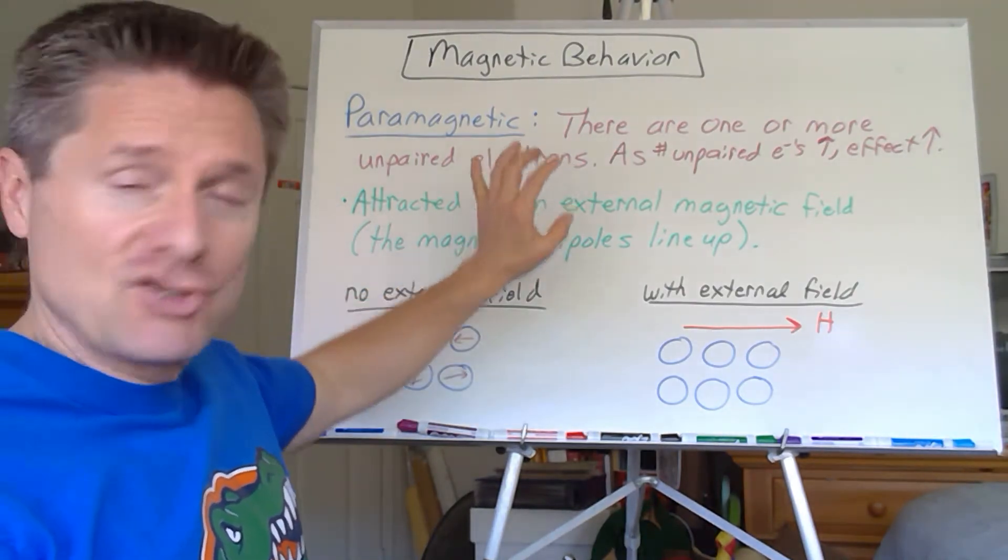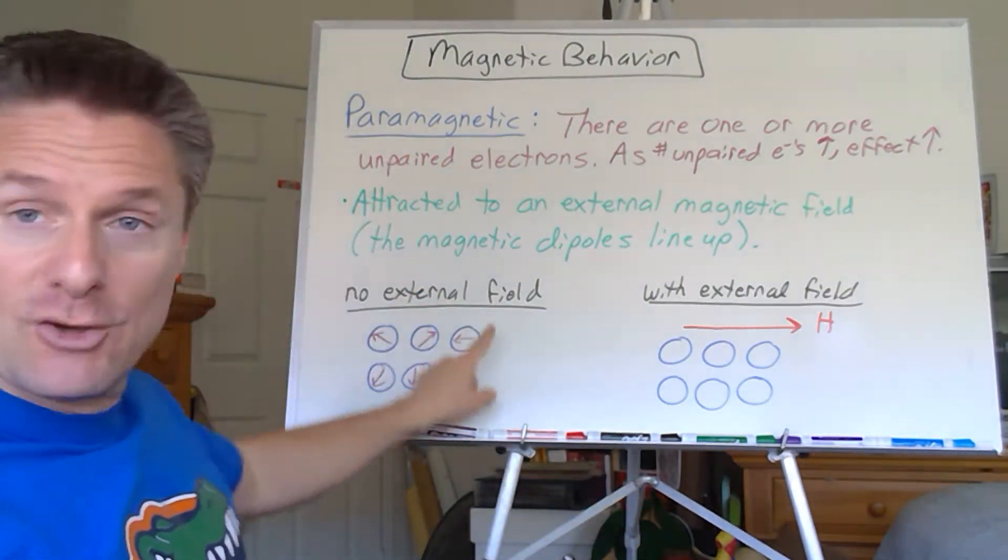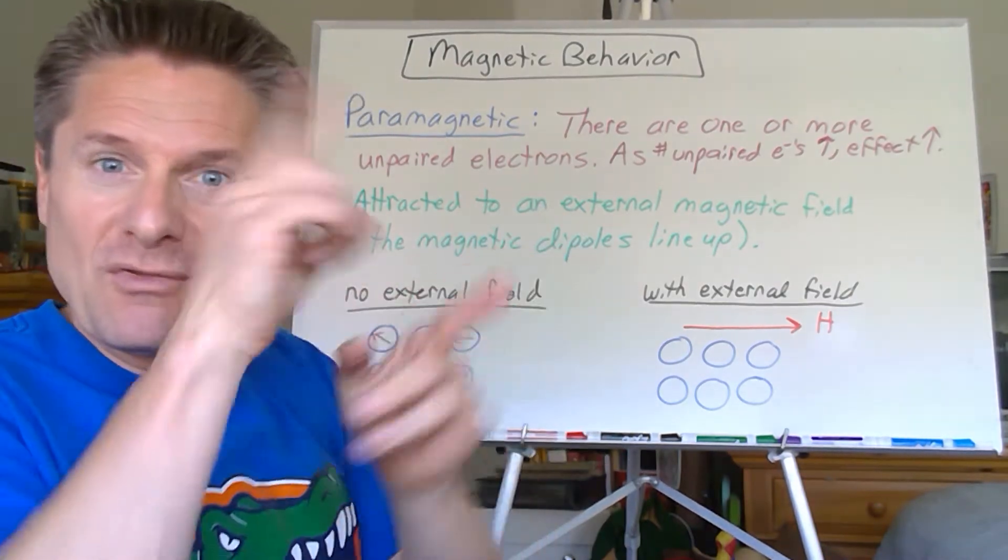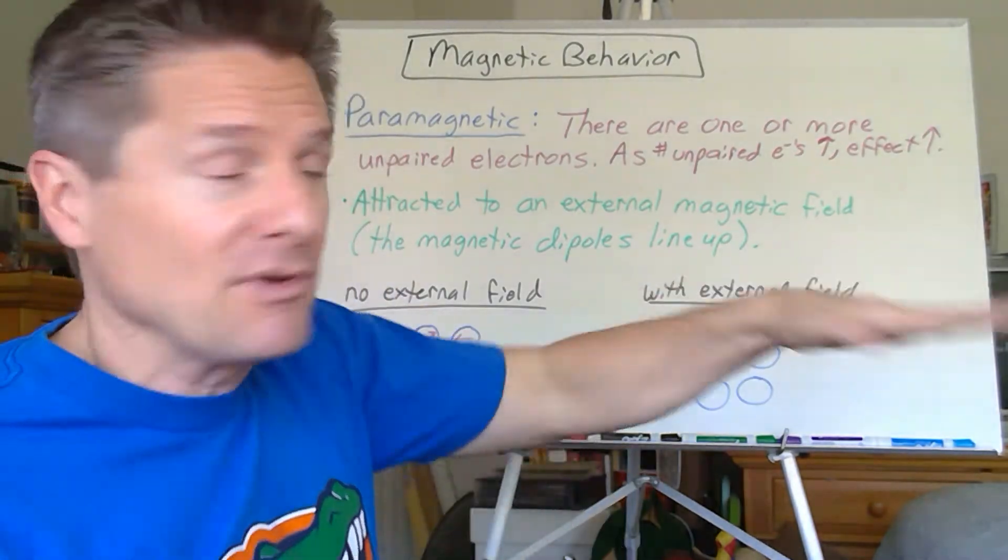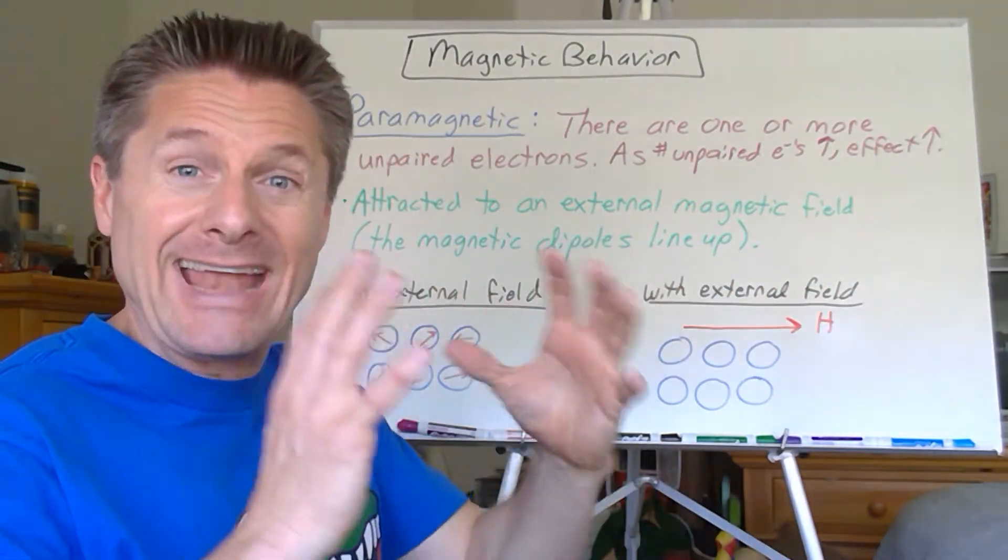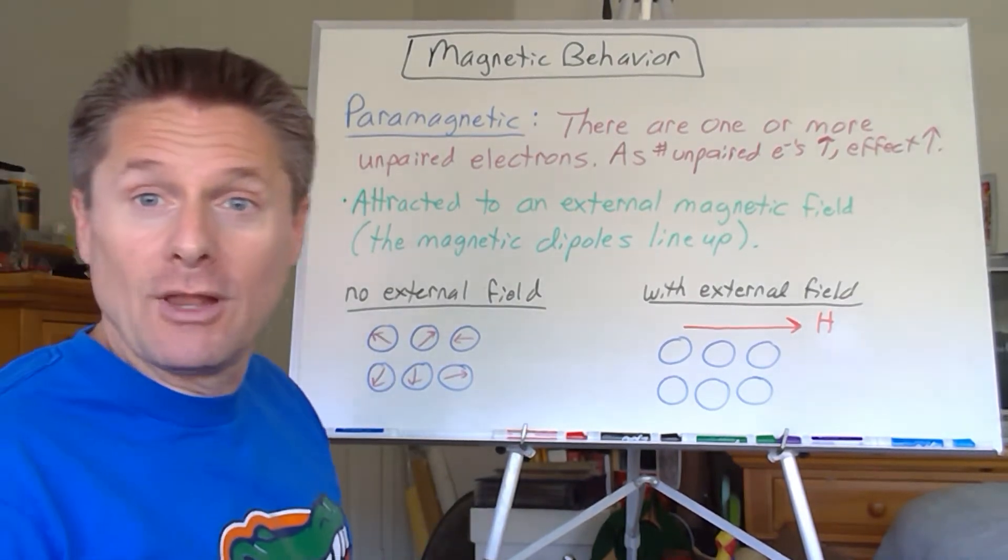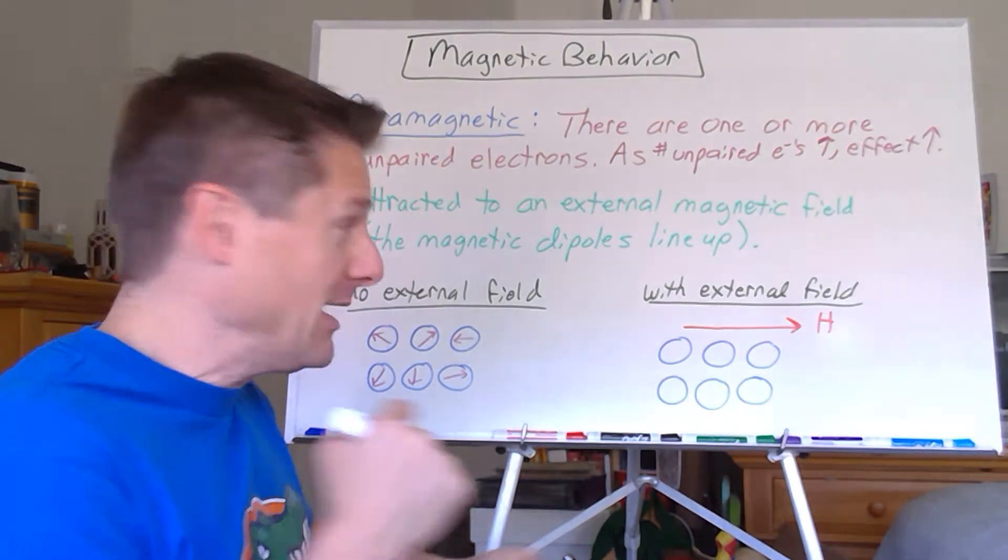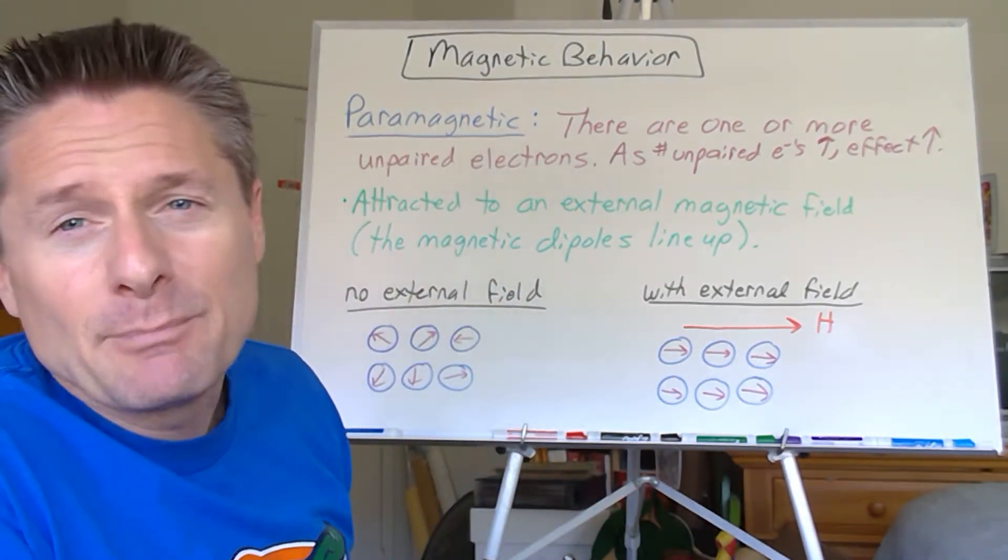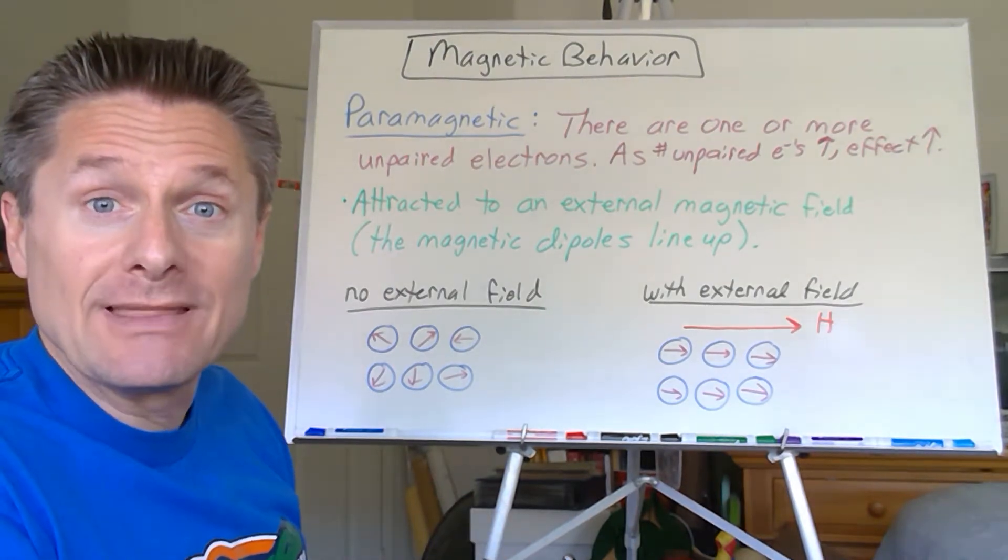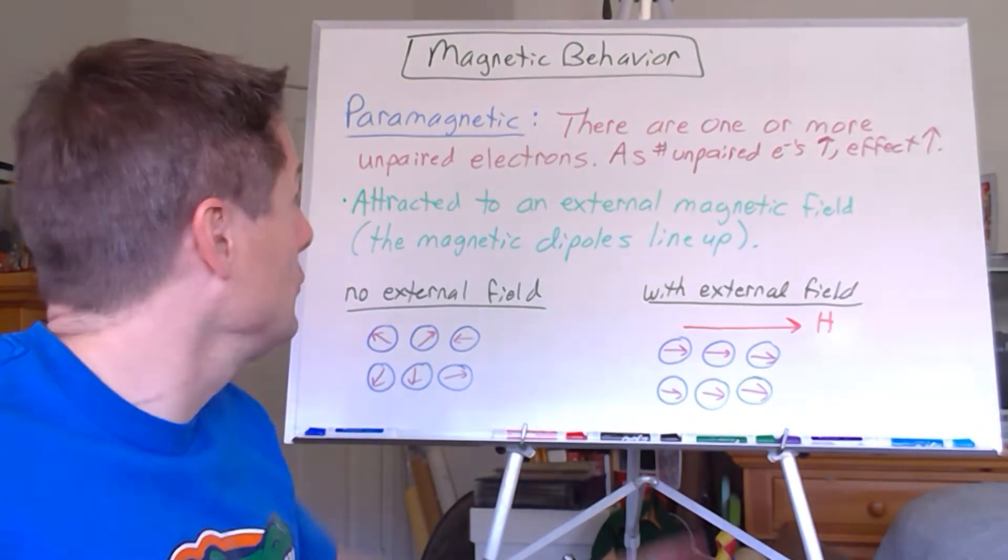They're attracted to a magnetic field. With no external field, you've got these unpaired electrons with magnetic dipoles in all different directions. When you put it inside a magnetic field, they use this capital H to represent the magnetic field. All these little unpaired electrons are influenced and they all go that way. That's paramagnetism. I highly recommend using orbital box diagrams so you can see where the unpaired electrons are.